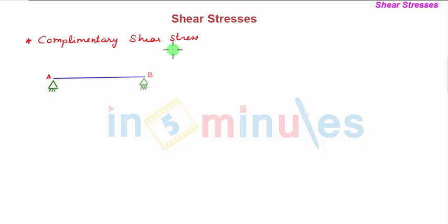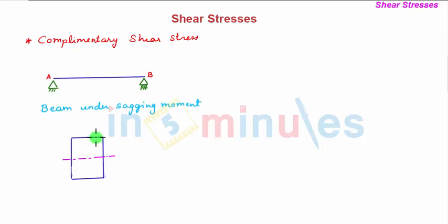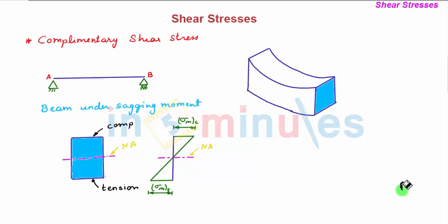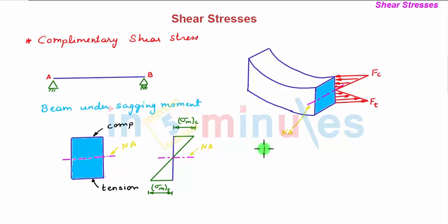Before we begin, let us consider the small concept of complementary shear stress. For a beam under sagging moment, the top layer is subjected to maximum compression whereas the bottom layer is subjected to maximum tension, and the neutral axis is subjected to zero stress. The compressive and tensile stresses vary linearly across the section. Under bending, the total compressive force Fc is equal to the total tensile force Ft for static equilibrium.